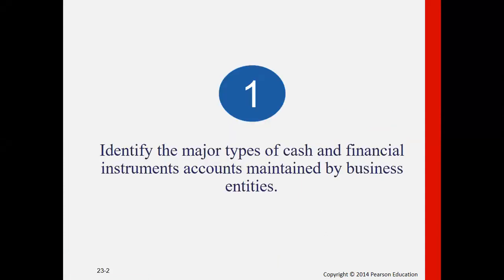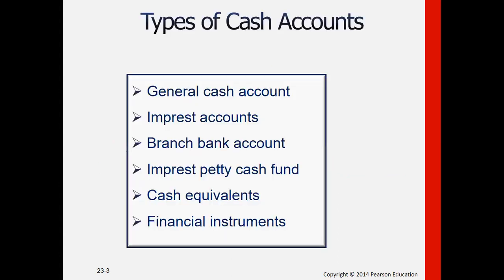Let's begin with the first objective: identify the major types of cash and financial instrument accounts maintained by business entities. For cash, we have general cash available for all uses, petty cash fund for small or minor expenses, and branch bank accounts. Cash equivalents are short-term highly liquid investments normally with a term of 90 days or less. Financial instruments are those with maturity beyond 90 days but normally one year or less, and can be converted to cash.